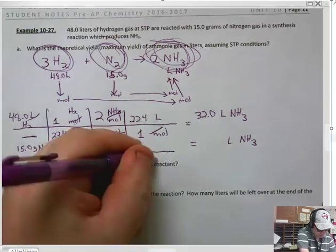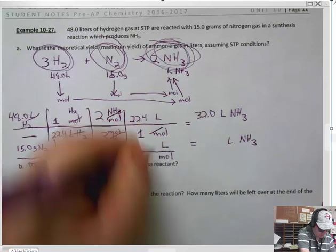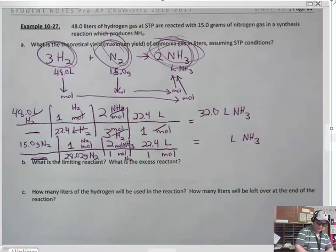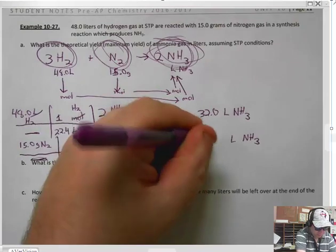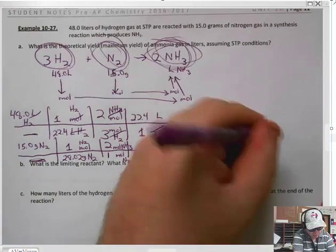And then we've got to do moles on the top, moles on the bottom. What are we going to convert to? Liters. 22.4, one mole. And we convert this answer and we get 24.0 liters. So we actually made this.